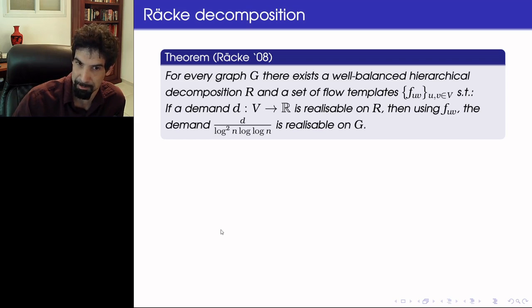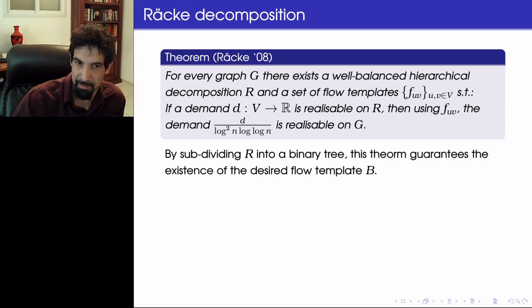By replacing every flow pattern on the tree from one vertex to the other with this flow pattern biasing scheme on the graph G. And we can do this by paying a factor of at most log² N log log N. So this means that by subdividing this Räcke decomposition into a binary tree, we can realize the flow template that we wanted, but we need to pay additional log² N log log N in the typical maximum gap. And so we arrive at log⁴ N log log N.